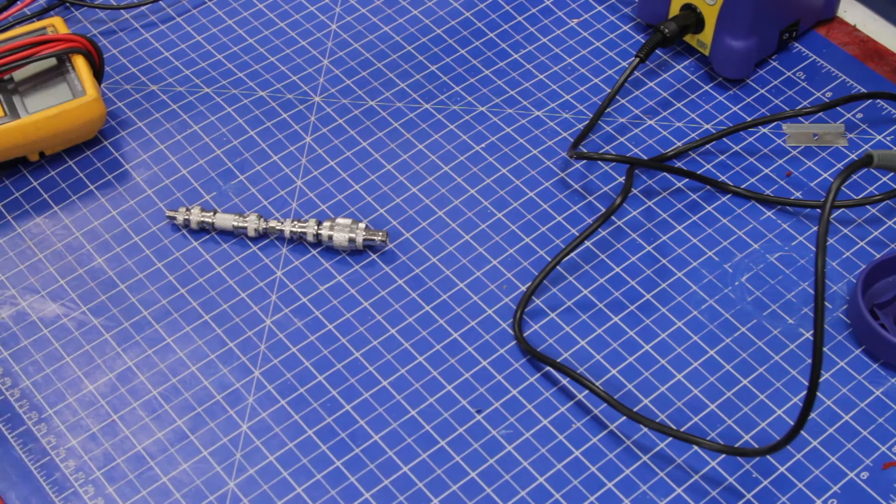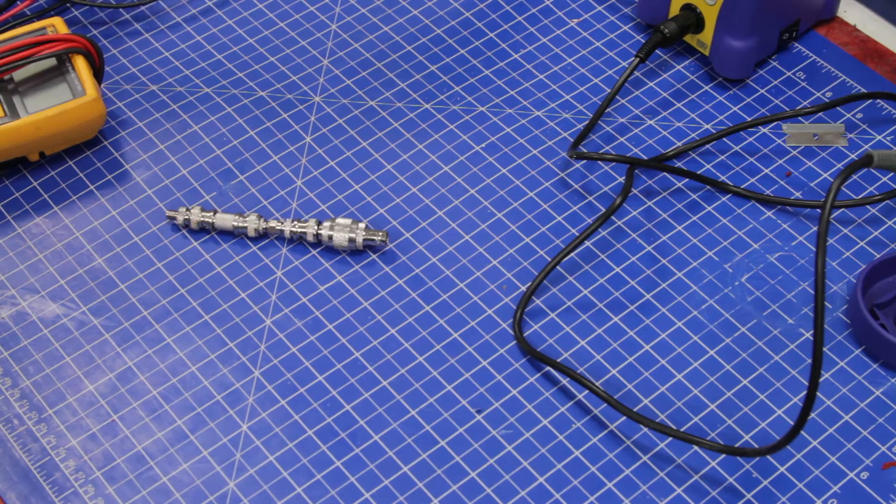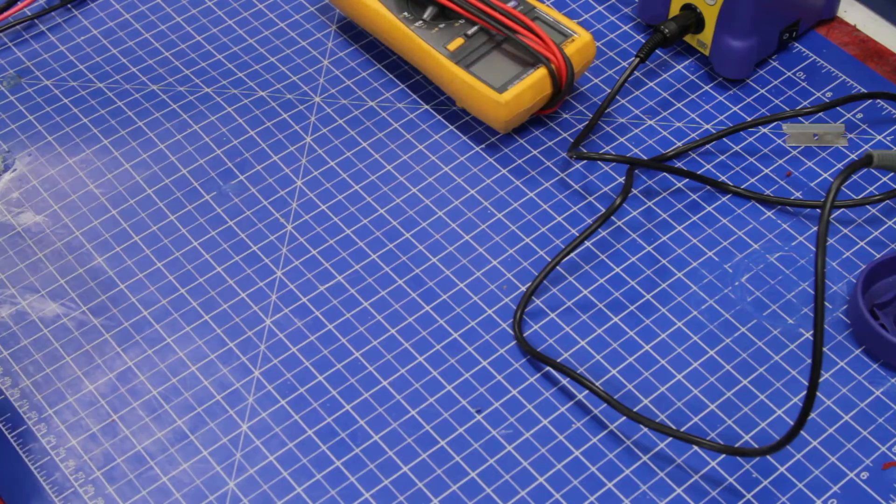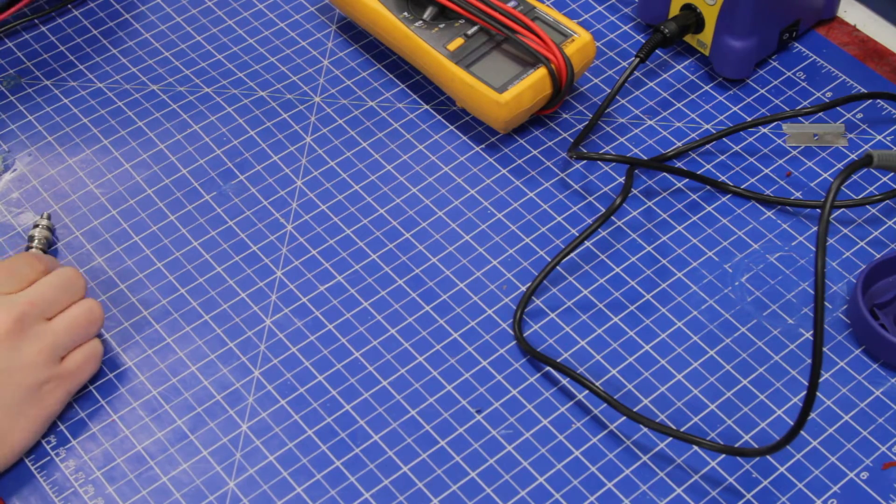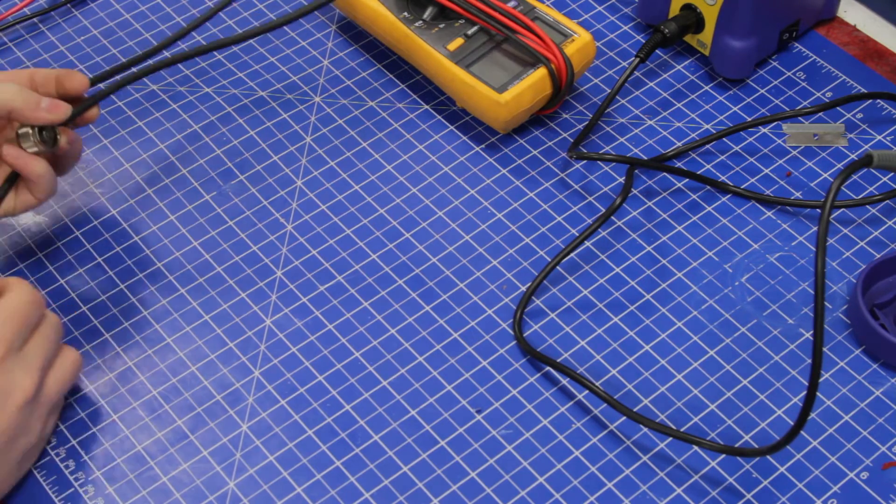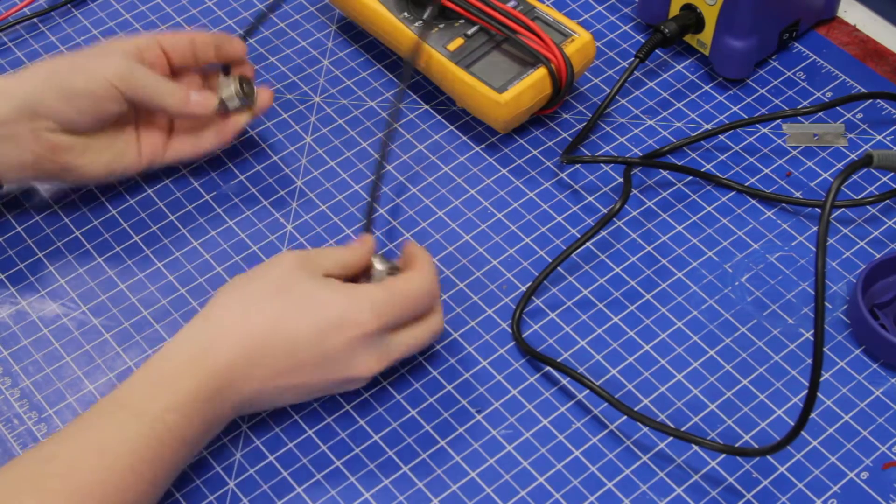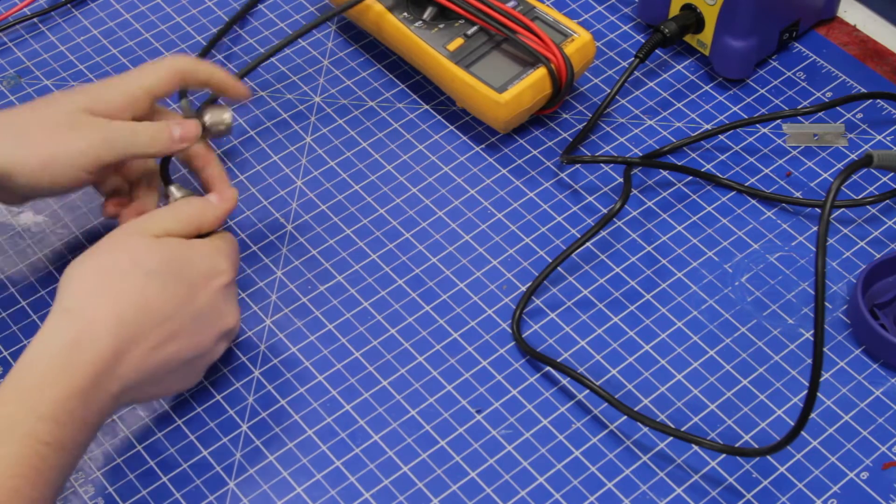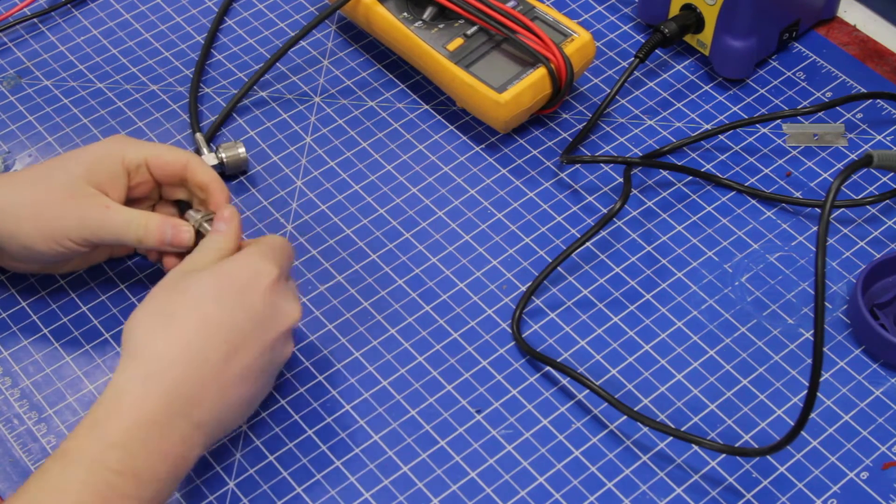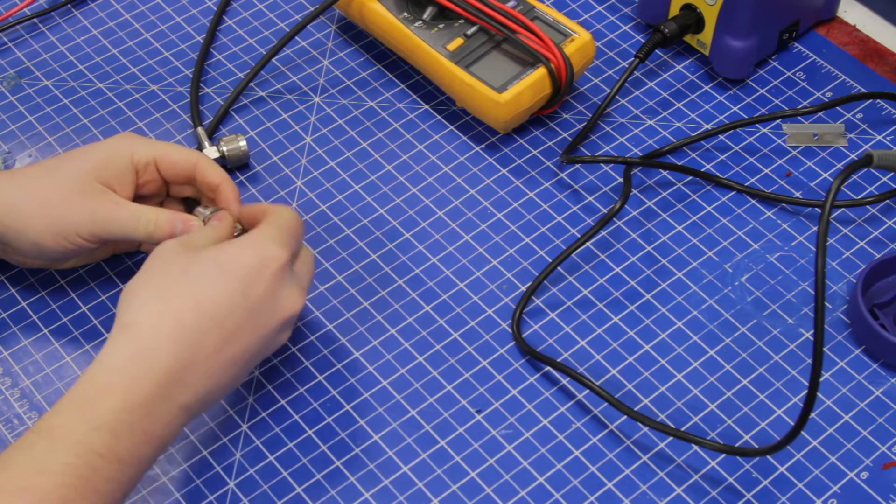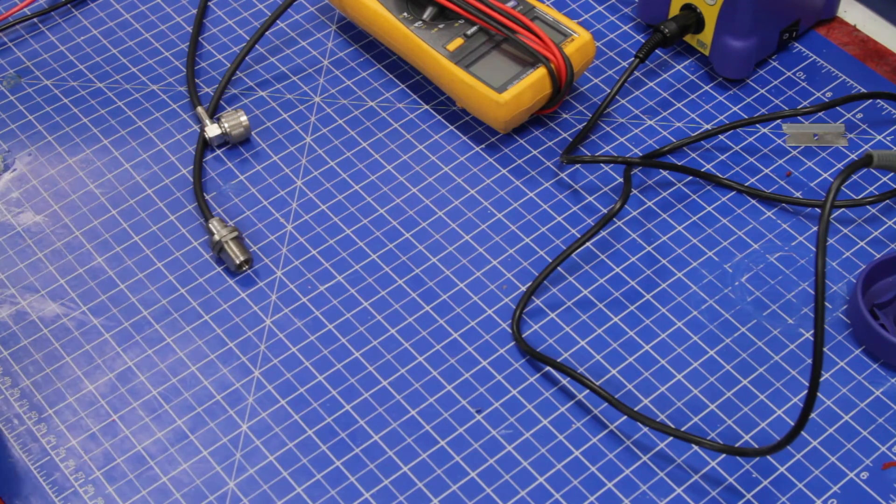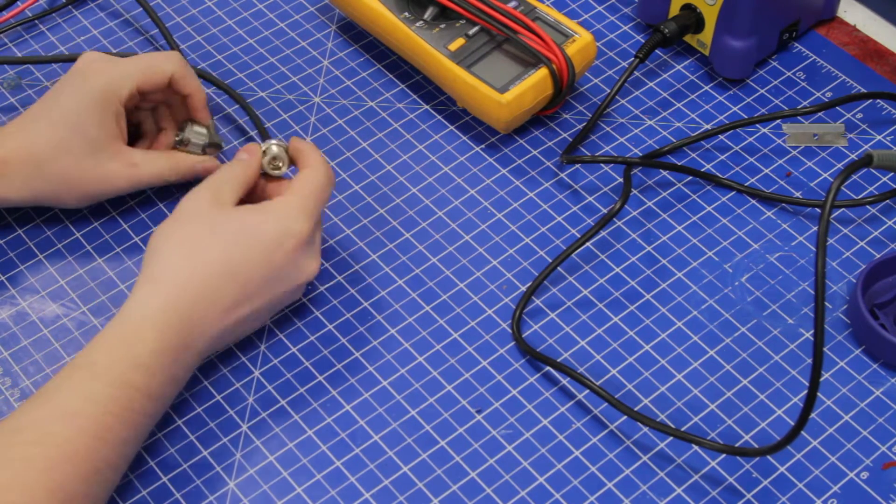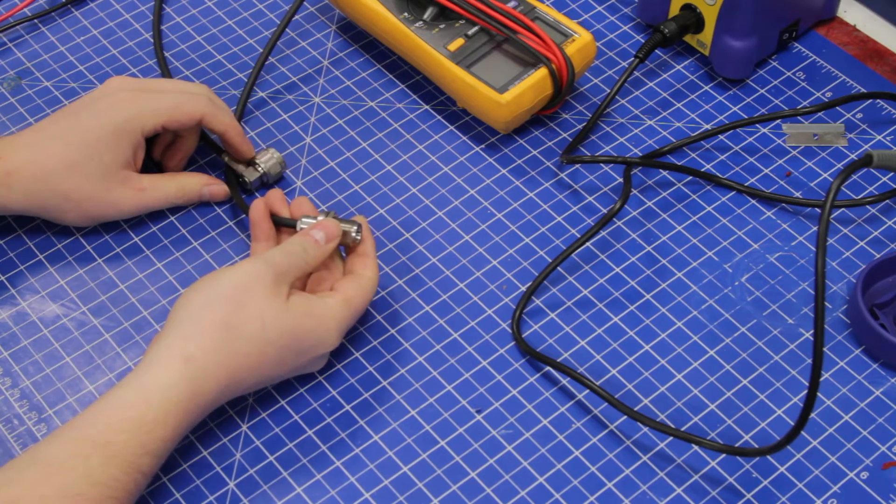So, welcome back to the shop. This is going to be a bit different than the last few videos. Let's say that you want to make some sort of a radio connector cable for a radio modem or microwave transmission or whatever, and you just made it and you're uncertain like, well, how did it turn out?